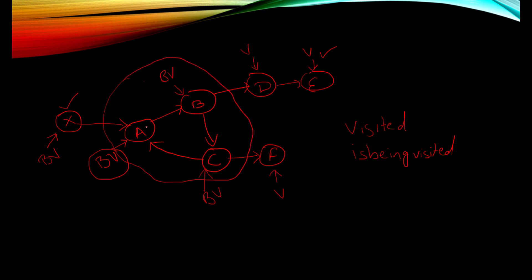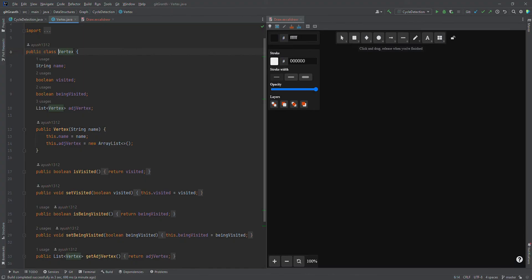Since we came back to A and its status is still being visited, that means there is a cycle in the graph, and the cycle was detected at vertex A. This is a simple algorithm. If you have watched my previous videos on DFS and BFS, we used a visited boolean field in our vertex class. In this scenario we are also going to use one more boolean variable called isBeingVisited or beingVisited — a field that needs to be created in the vertex class and set as and when we visit a node.